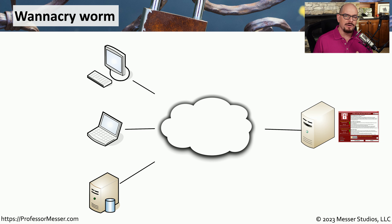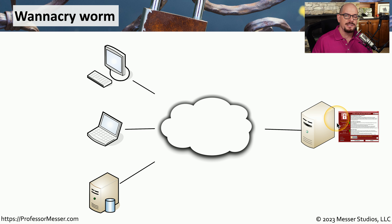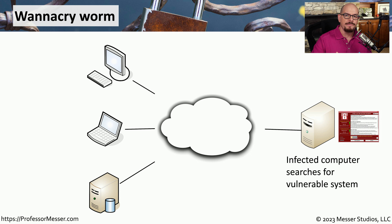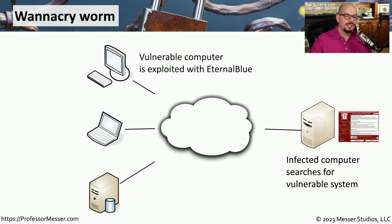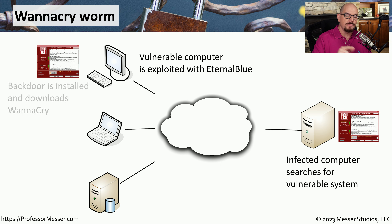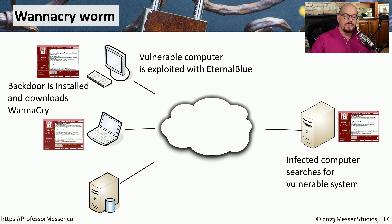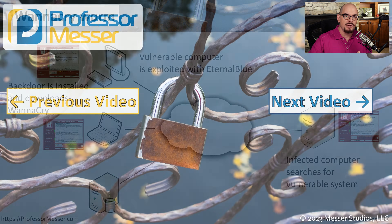Worms are a relatively rare occurrence. But let's look at an example of a worm called the WannaCry worm. Not only was this worm able to propagate itself automatically, it also installed ransomware so that it would encrypt and make unavailable all of the user files on these systems. This started with a computer that is infected. That computer then looked across the network to try to find another system that was vulnerable. Once the system is infected, EternalBlue will install a backdoor, pull down the ransomware code, and infect the machine with that ransomware software. At this point, the worm continues to propagate itself and find all of the vulnerable systems that may exist on this network and infect those also with the same ransomware.